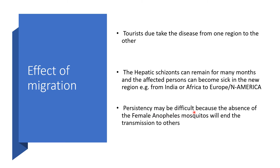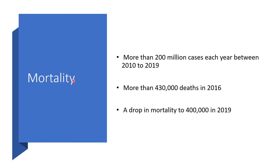The persistency may be difficult to sustain because the absence of the female Anopheles mosquito will end the transmission to others in the West — in Europe and North America. Regarding mortality, more than 200 million cases each year between 2010 to 2019 have been recorded, and more than 430,000 deaths were recorded in 2016 by the World Health Organization. However, there is a drop in mortality from 430,000 in 2016 to 400,000 in 2019.